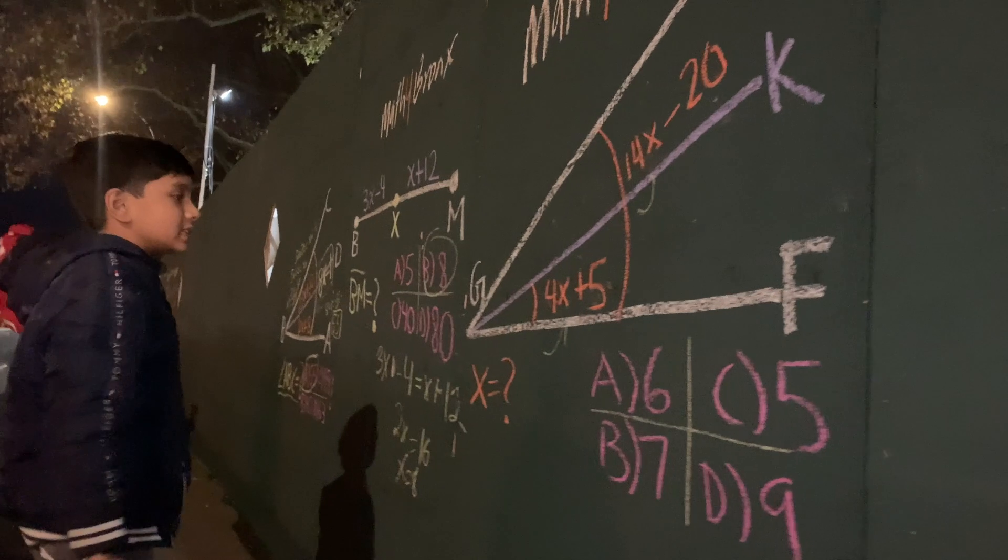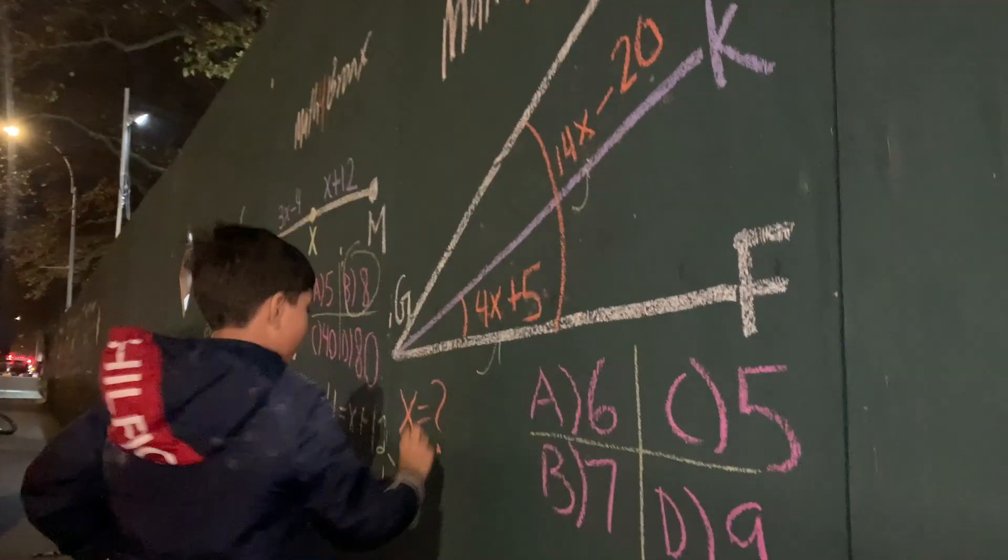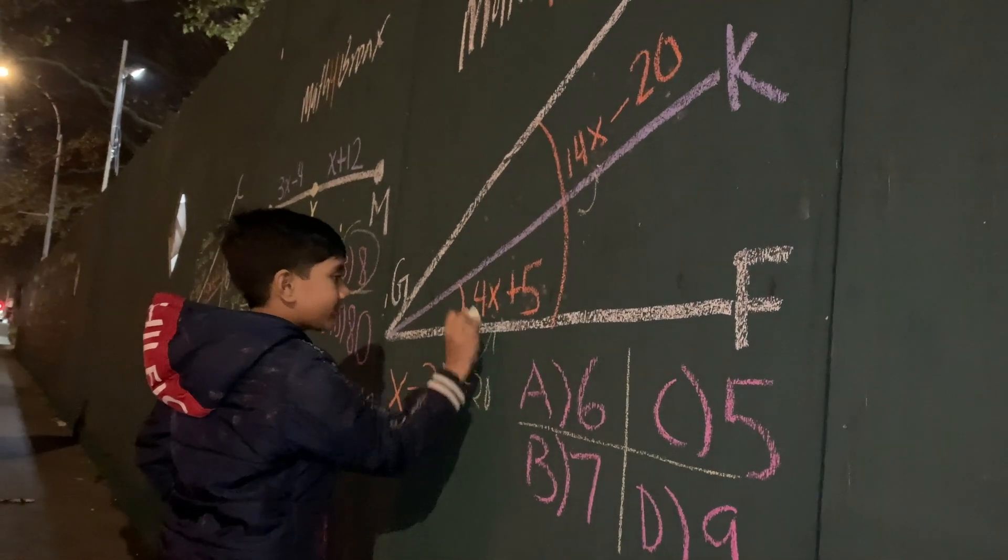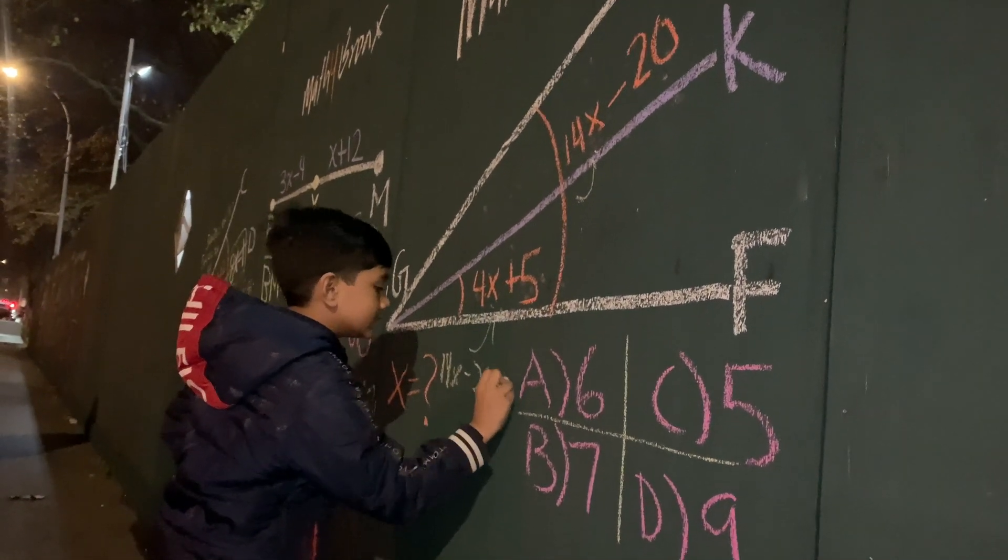So that means that 14x minus 20 is equal to twice this value, 8x plus 10 precisely.